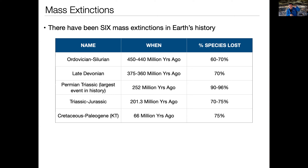Between the Ordovician-Silurian event and the late Devonian extinction, the species that survived the first extinction diversified, but then a whole bunch of them became extinct when we got to the late Devonian extinction. The next extinction happened 252 million years ago — that's called the Permian-Triassic extinction — and it was the largest extinction in the history of the Earth. We lost 90 to 95% of all the species on Earth; only four or five percent survived.